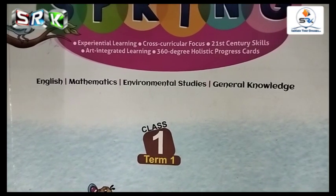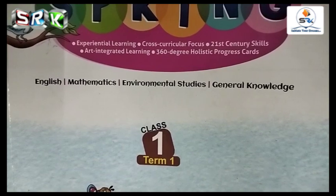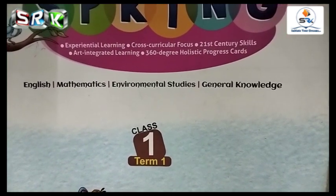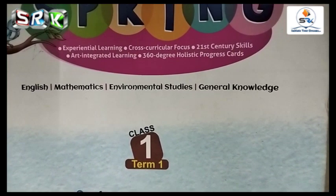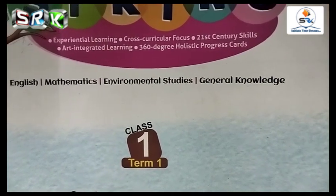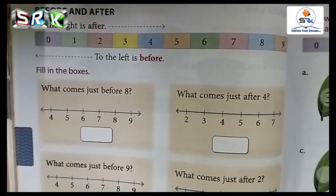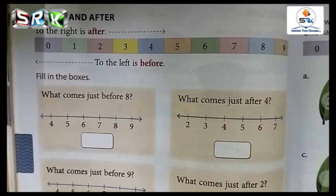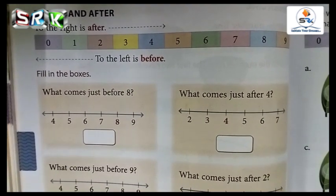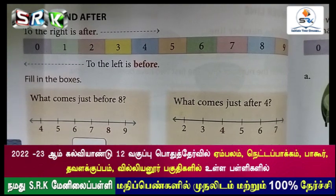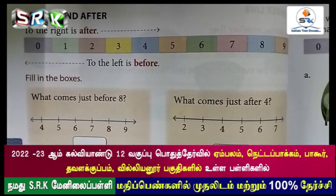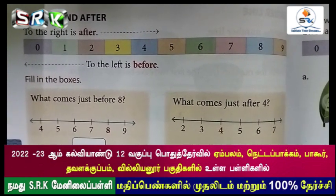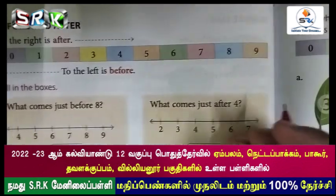Good morning, first standard students! I hope everyone is fine. This is your Maths class. Open your book at page number 70. Today we are going to learn about before and after numbers. Before means 'naughty' and after means 'pinnadi'. I will write only examples. All of you take your Maths book.